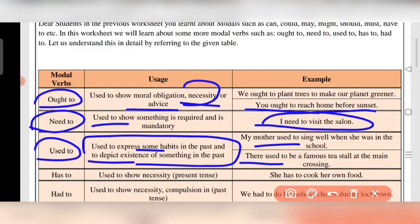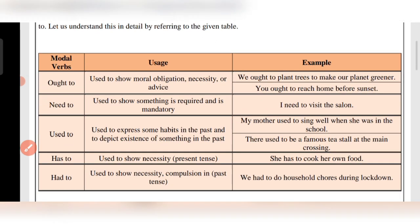'There used to be a famous tea stall at the main crossing.' Has to is used to show necessity in the present tense. For example: 'She has to cook her own food.'